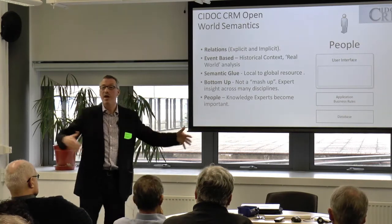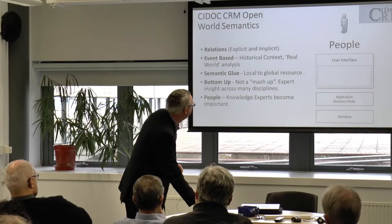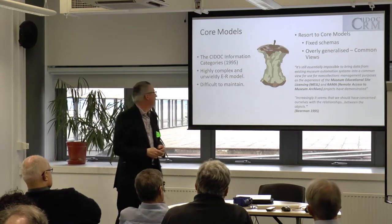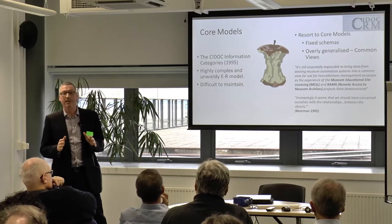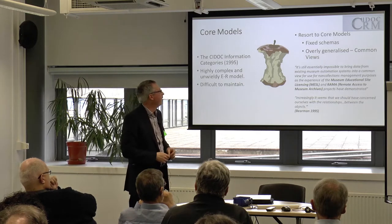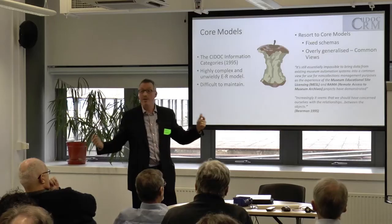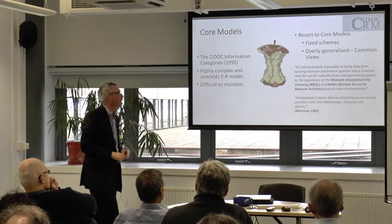In 1995, CIDOC CRM was developed. We started to realize that bringing together lots of information across cultural heritage organizations was very, very difficult in a traditional entity-relationship database model — it gets bigger and bigger, more unwieldy, more complex, and difficult to implement. People were resorting to core models — creating fixed schemas and getting people to try and fit their data into them. Not only are these fixed schemas, but they're also overly generalized. People like David Behrman in 1995 were writing articles saying it's essentially impossible to bring data from existing museum automation systems into a common view.